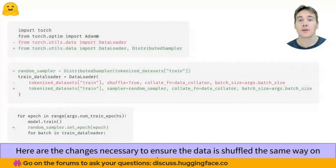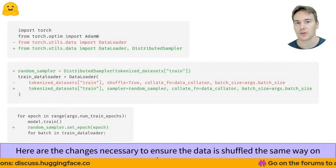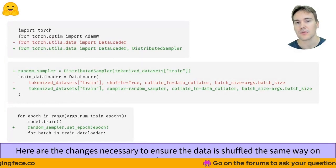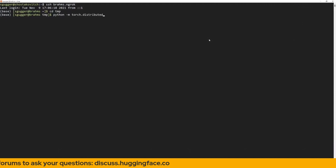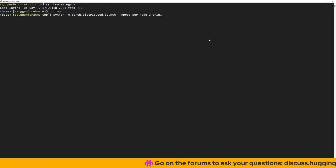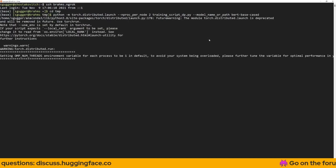In terms of code, this requires all of those changes just to replace the shuffle equals true line we used in our training data loader into something that will work properly for distributed training. Now that we have those changes ready, we need to launch our training on our GPUs. PyTorch provides a launcher for this, so you can type this command: python -m torch.distributed.launch, minus nproc_per_node the number of GPUs you have, two here, the name of the training script followed by the arguments to your script. The script launches properly and starts training.